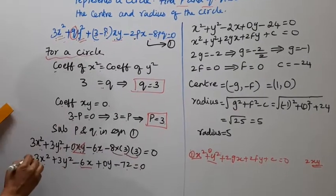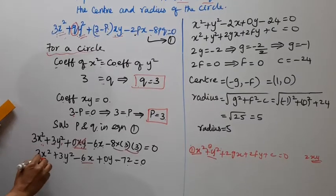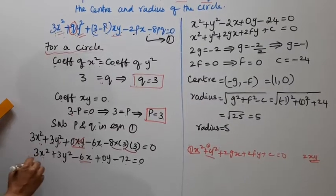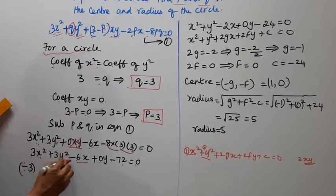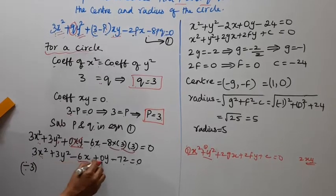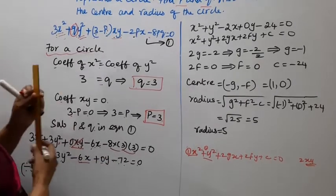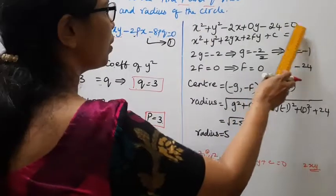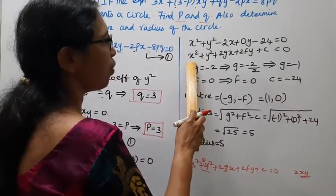To get the general equation as x², divide the entire equation by 3: x² + y² - 2x + 0y - 24 = 0. This is the general form of the equation.